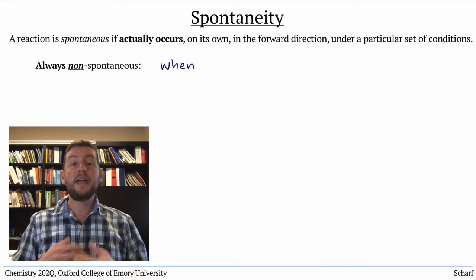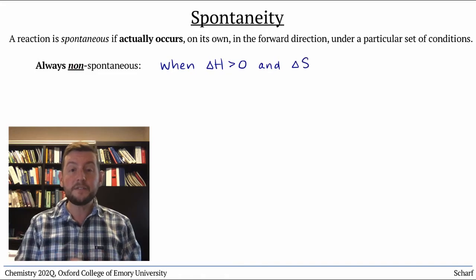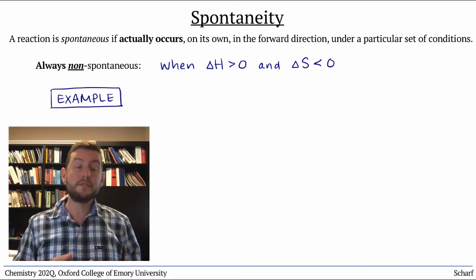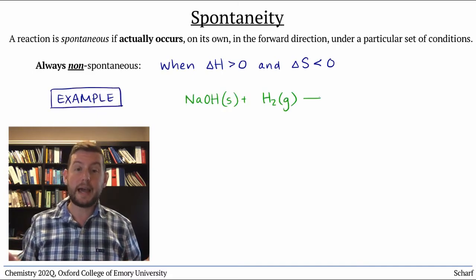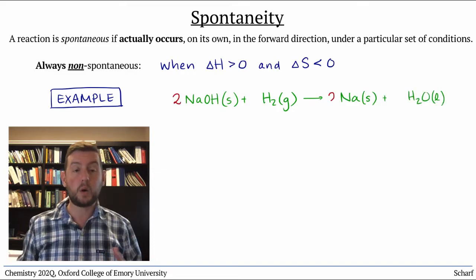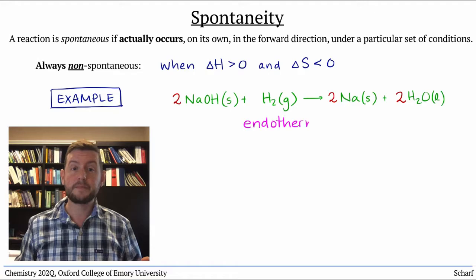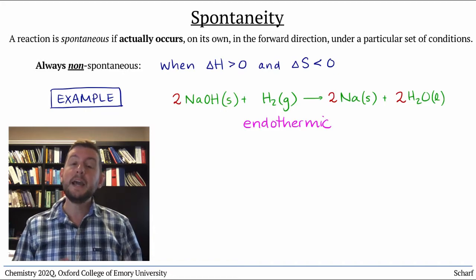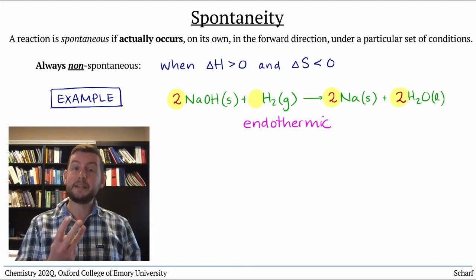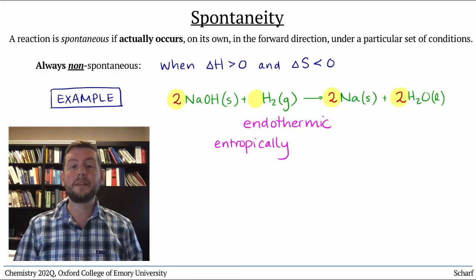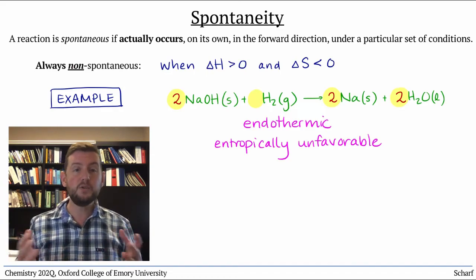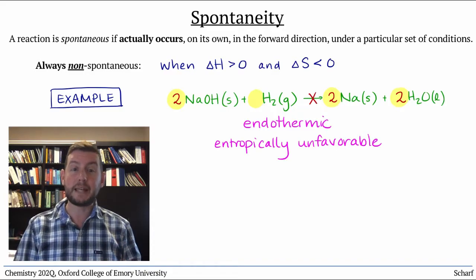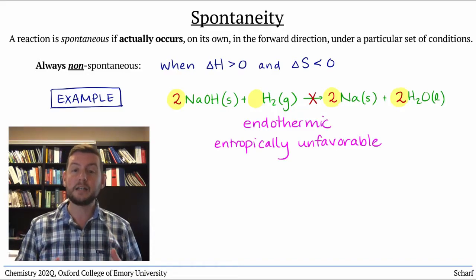Processes that are enthalpically and entropically unfavorable are always non-spontaneous. For instance, the reaction of sodium hydroxide with hydrogen gas to produce sodium metal and water is endothermic — if you've ever seen the very explosive reverse reaction, you might be able to guess this. And since it takes three molecules and makes them into four, it is entropically unfavorable as well. So no matter what you do to a mixture of sodium hydroxide and hydrogen gas, you won't make any sodium metal and water. This reaction is non-spontaneous.